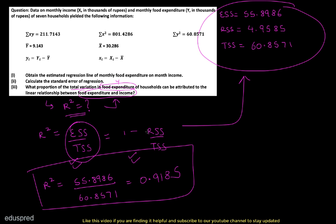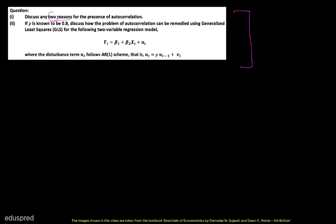So the R square value is equal to 0.9185, and that is the answer to part number 3. With this, we are done with the first question. Let's move to the second question now.